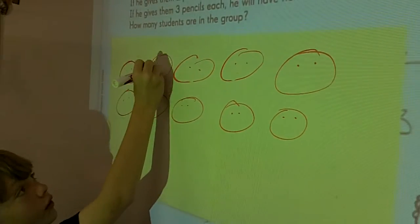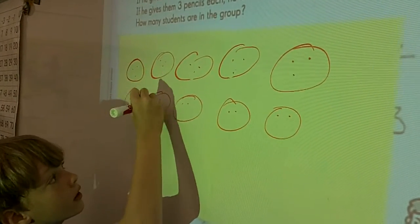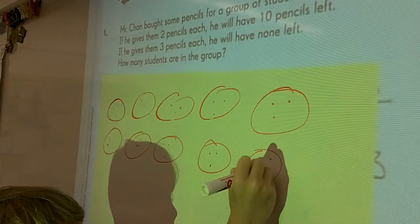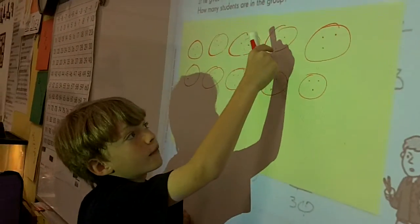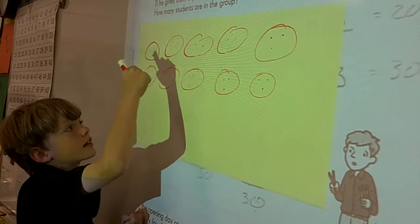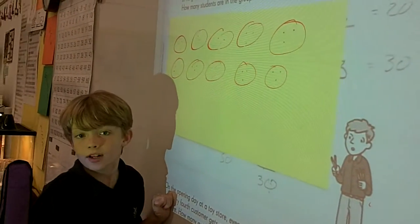So if I gave all of the kids another pencil, that's one, two, three, four, five, six, seven, eight, nine, ten. So if I took that away, I would have ten pencils left.